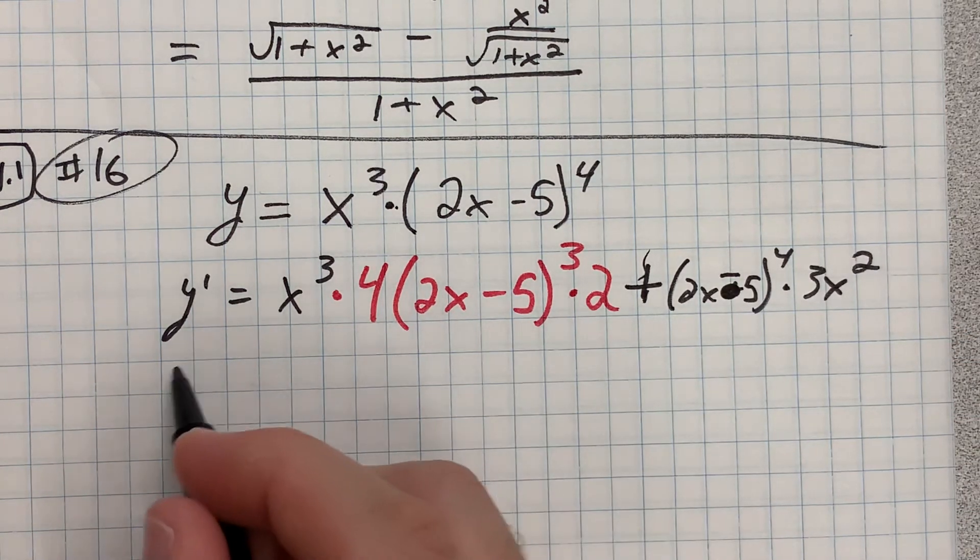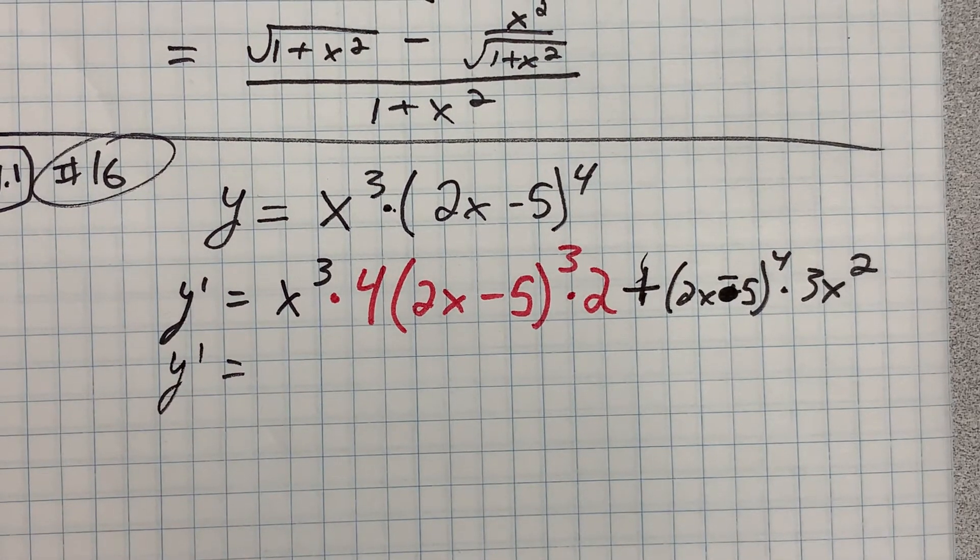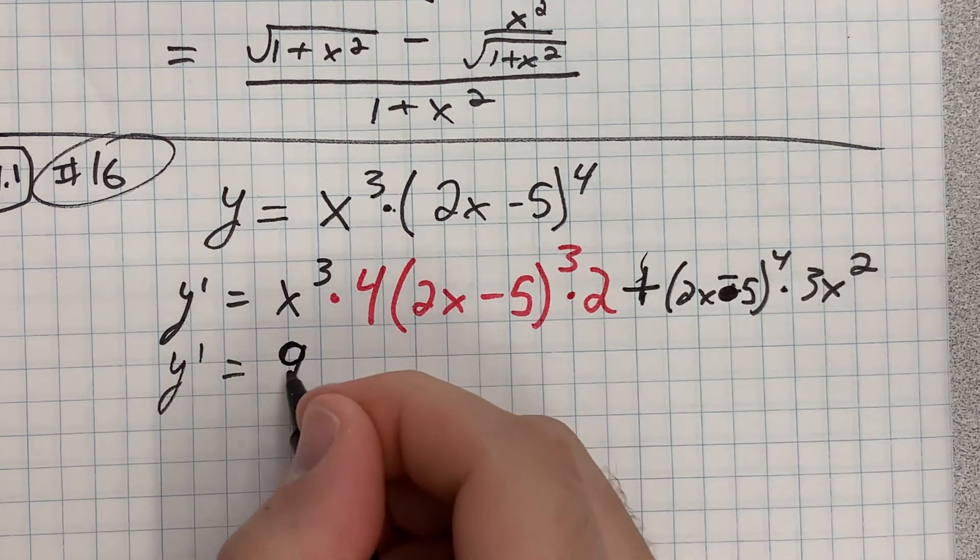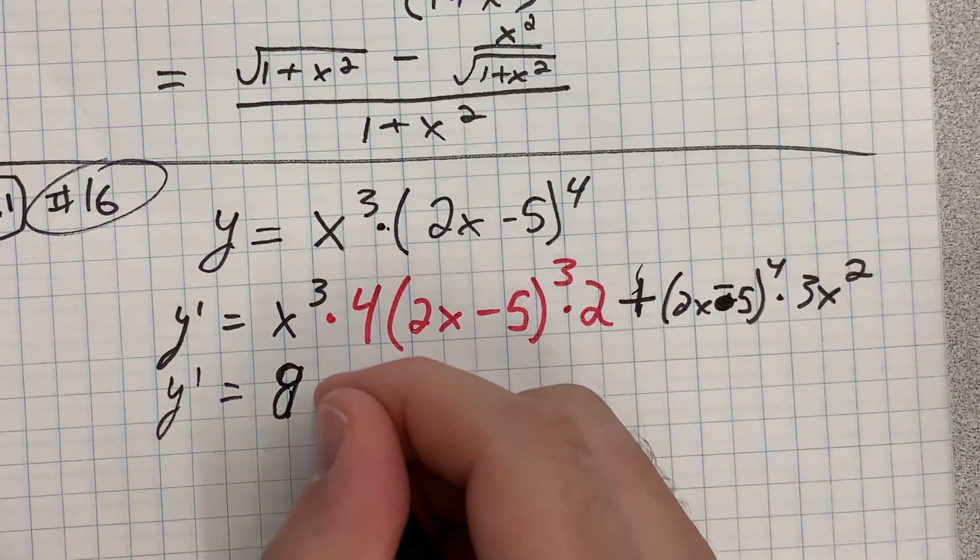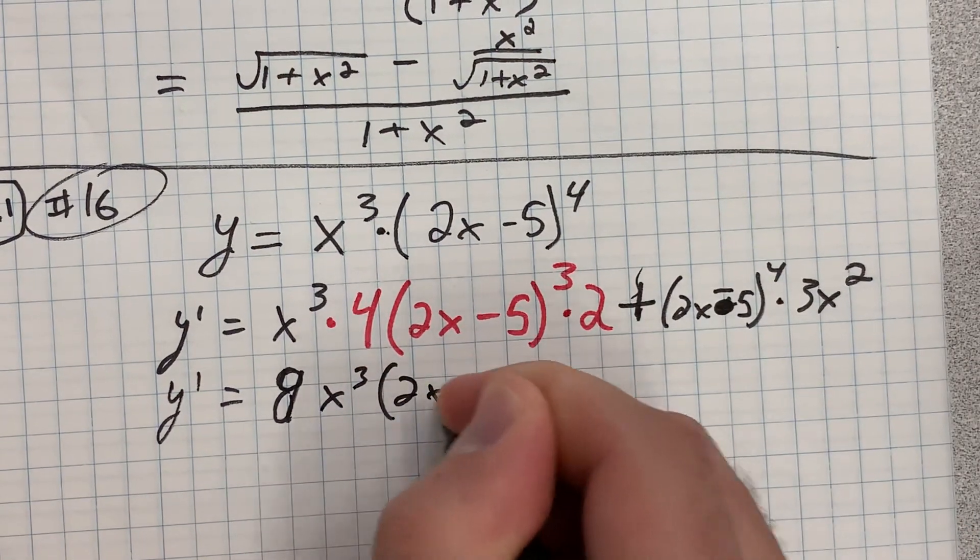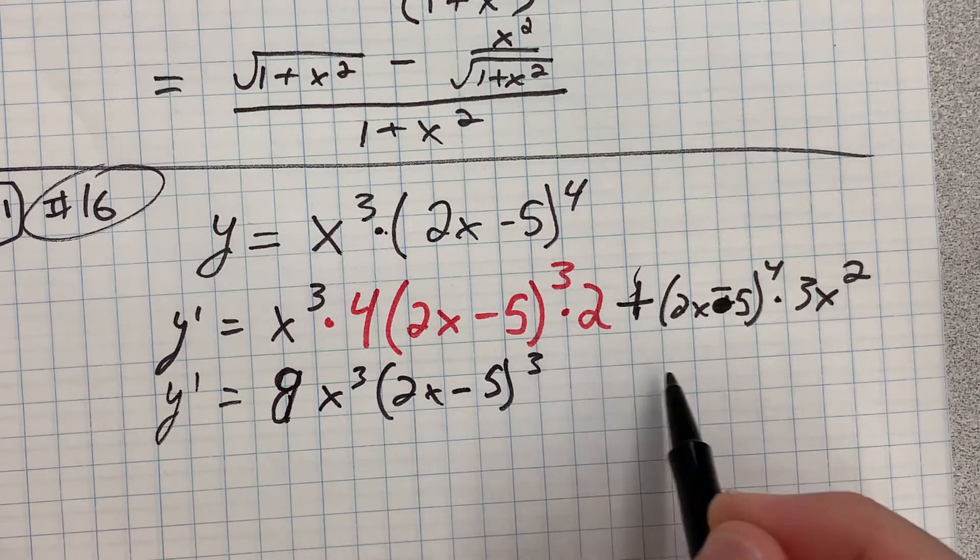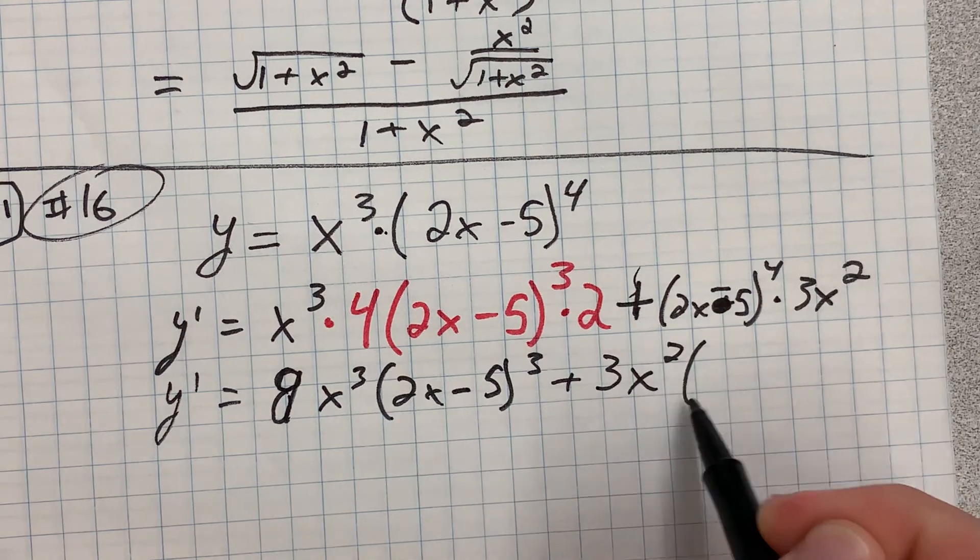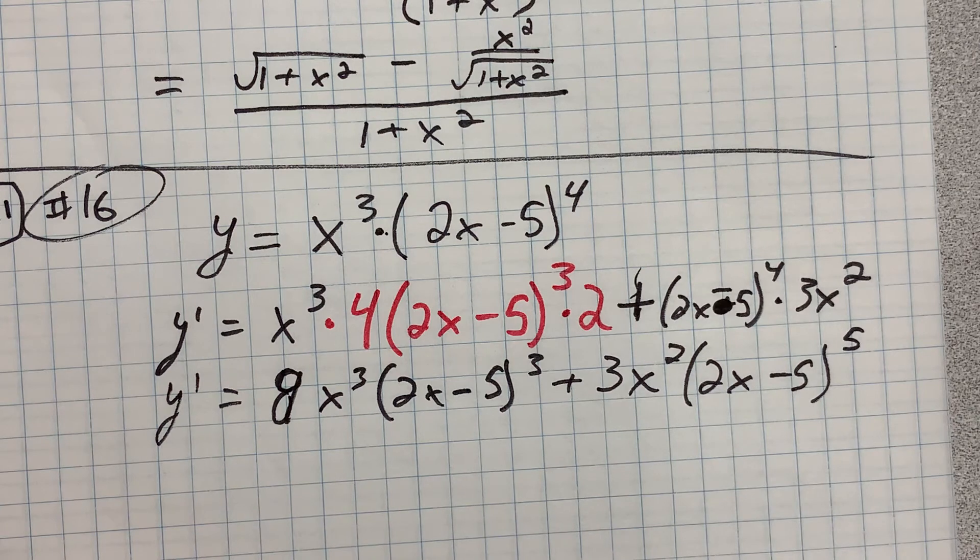And then clean it up. So y prime is 4x cubed—nope, sorry, 8—8x cubed times (2x minus 5) to the third, plus, I'll just put this in front, 3x squared times (2x minus 5) to the fifth. And I think that's sort of it.